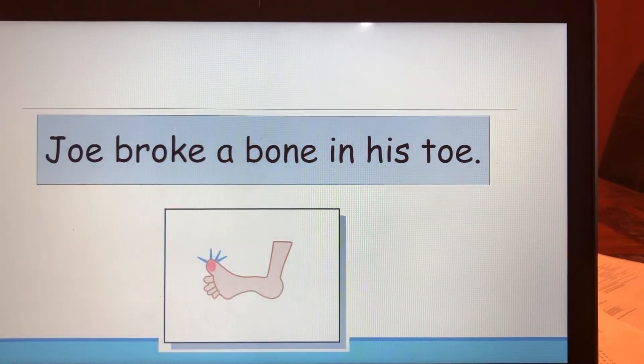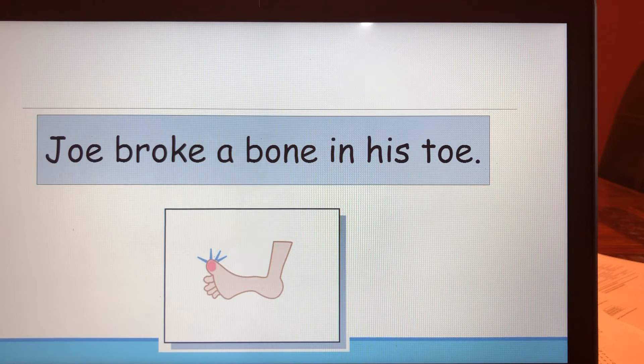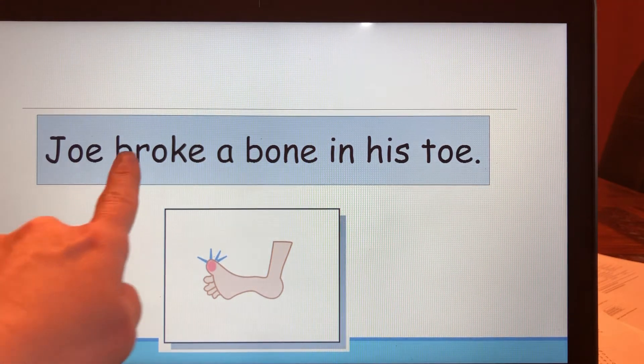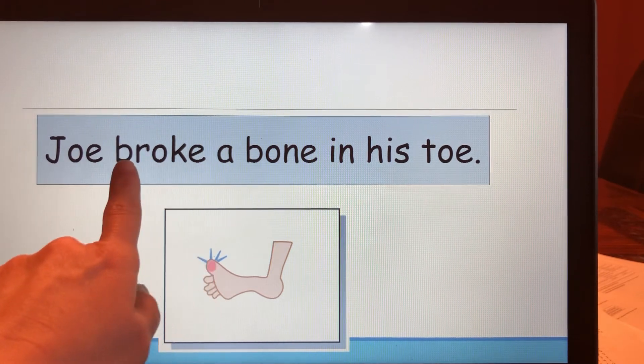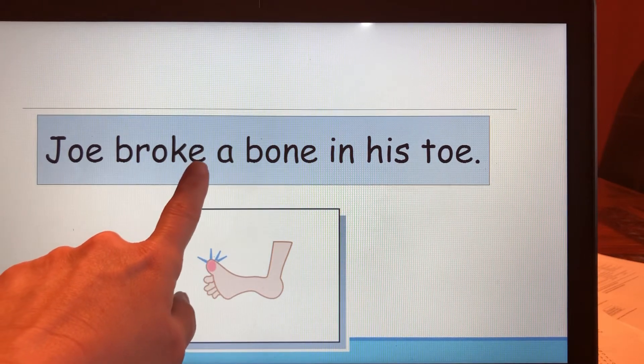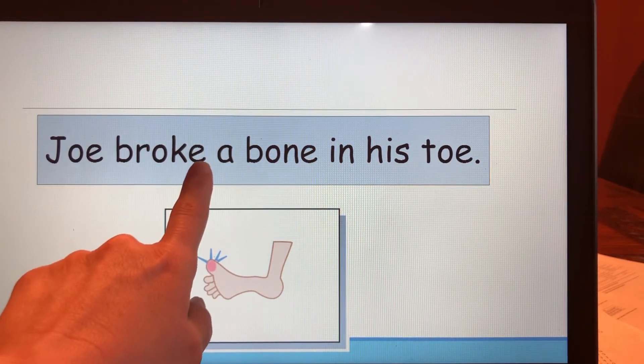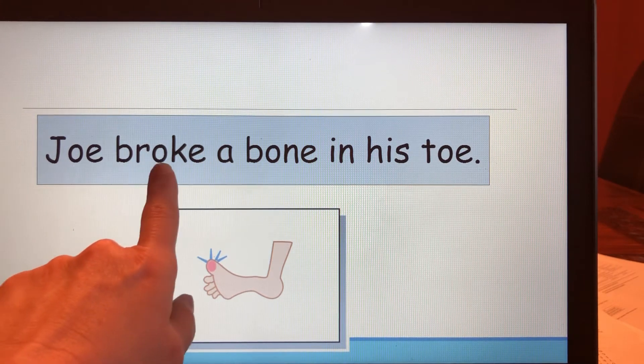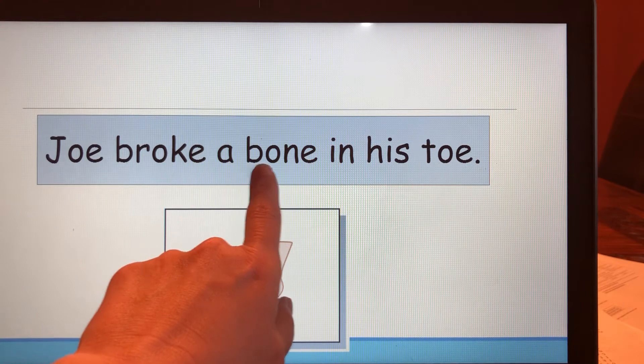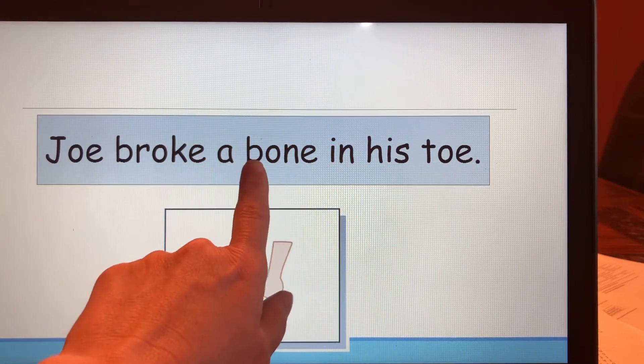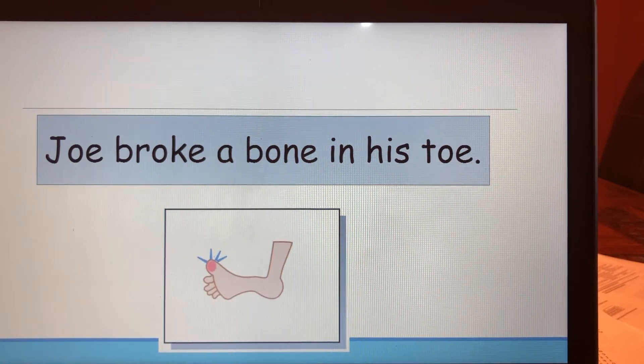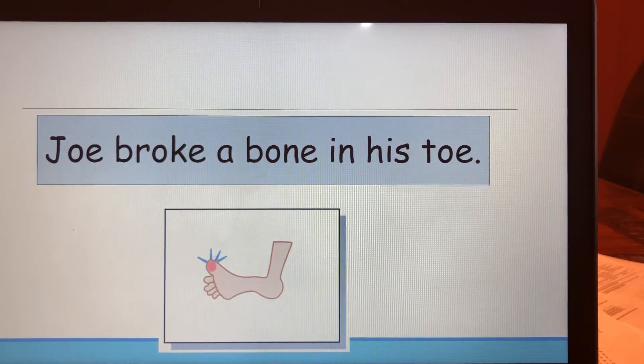Then I want you to check the word toe because it's got OE in it, and that's what we're working on today. And a couple more tricky things: we have two words with sneaky E. So the word broke: B-R-O-K-E. You don't hear the E and it's got a blend at the beginning, so that was a difficult word. How about the word bone? Did you get it right? B-O-N-E with a sneaky E on the end.